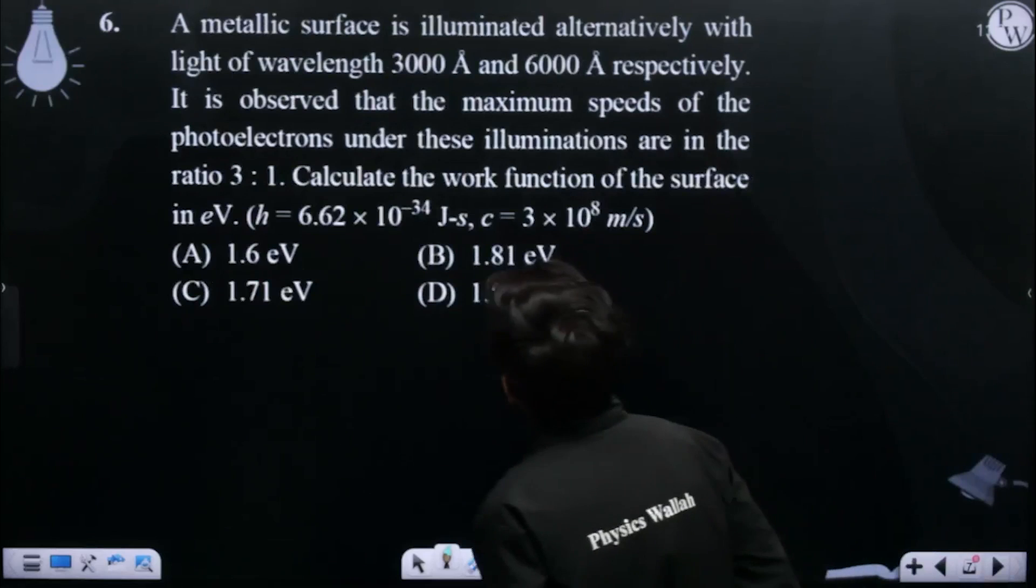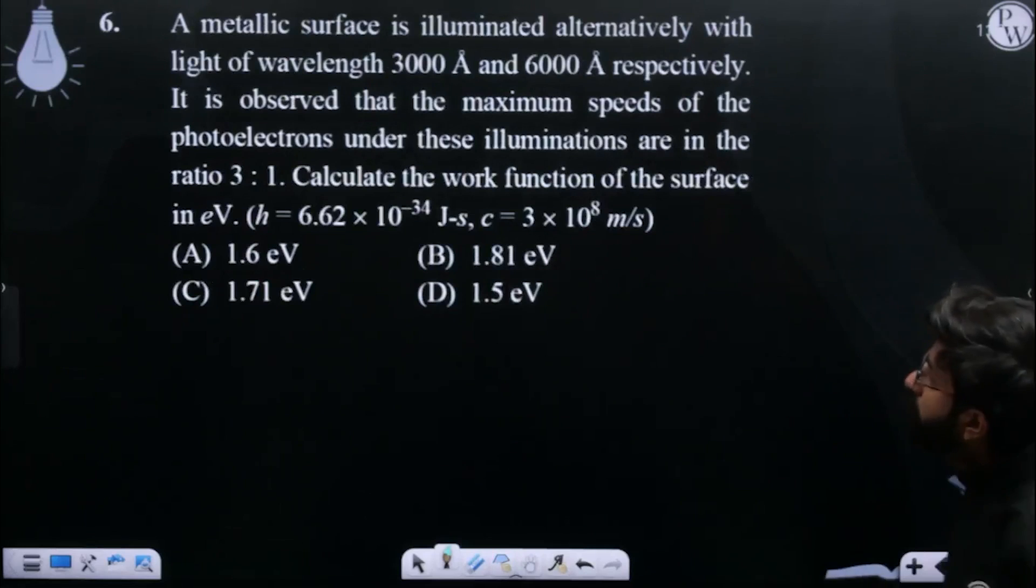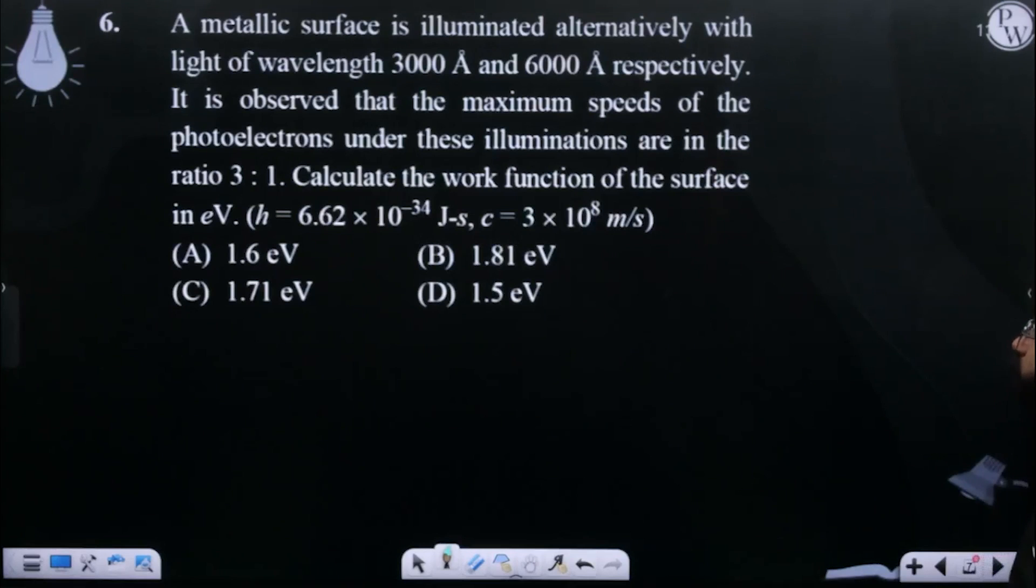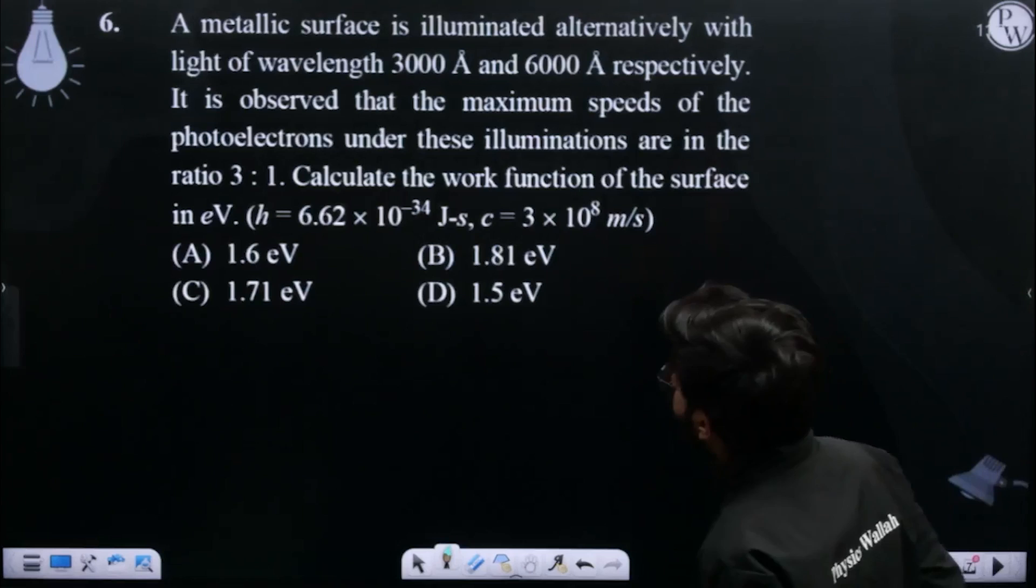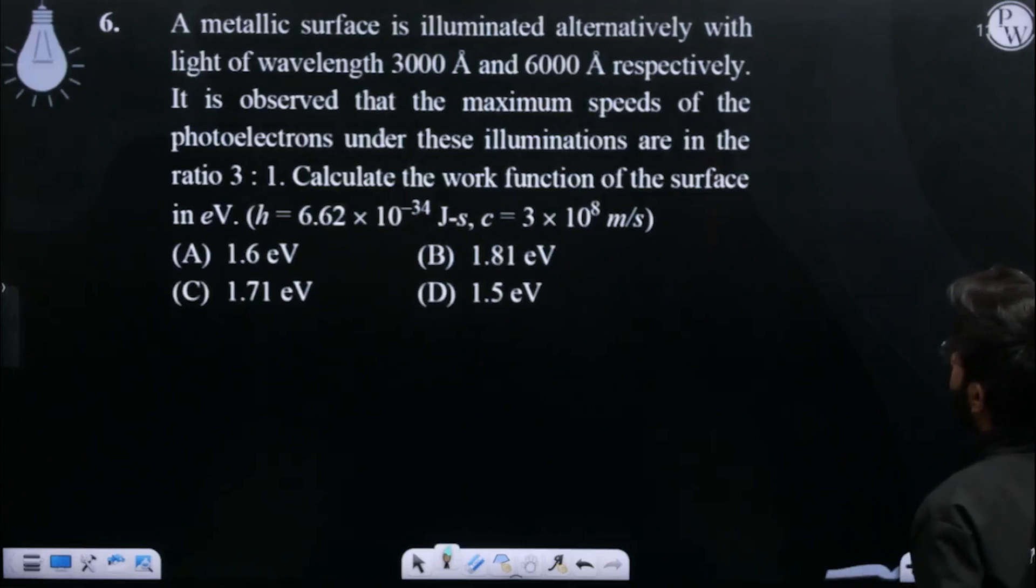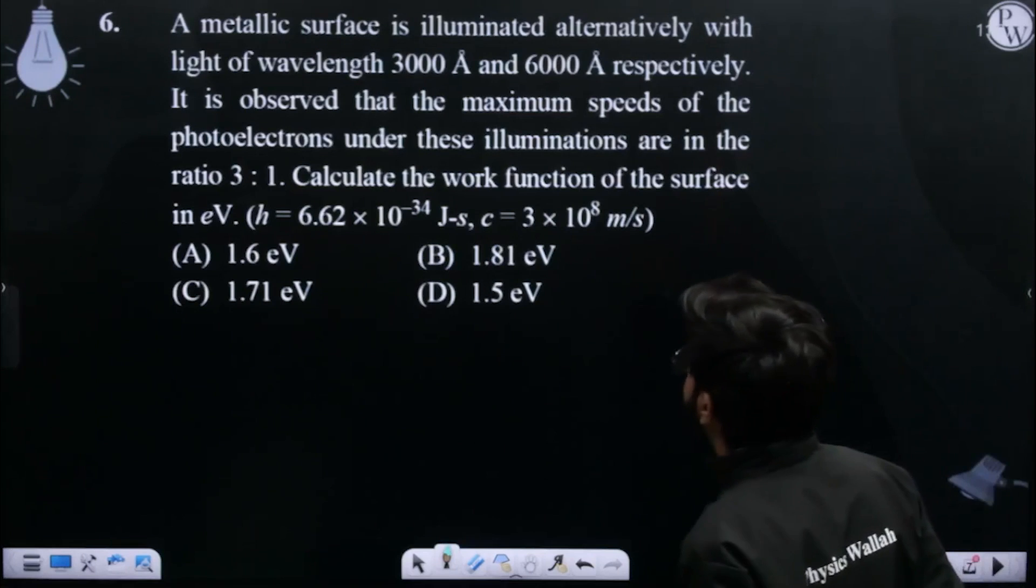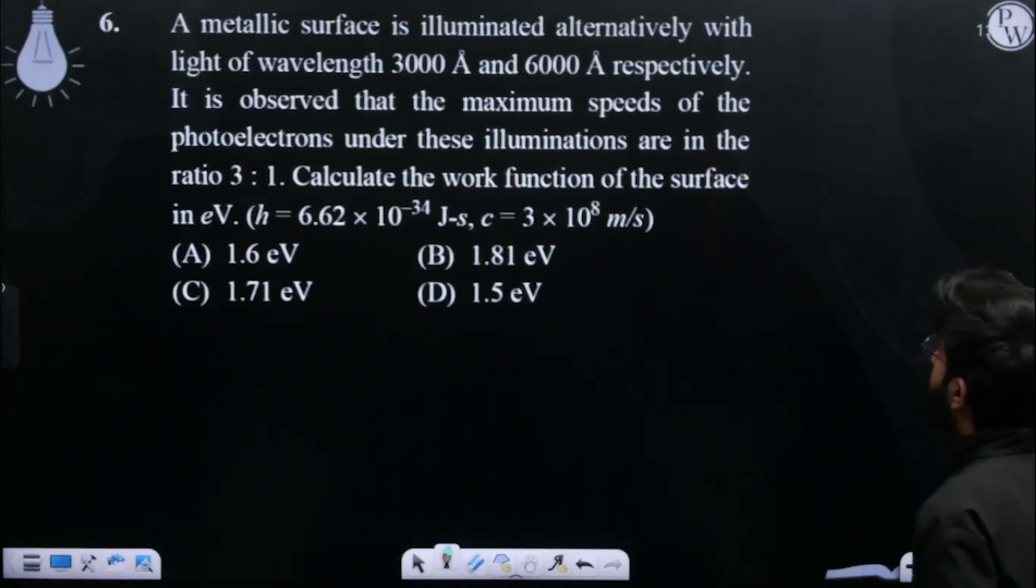The next question is: a metallic surface is illuminated alternately with light of wavelength 3000 angstrom and 6000 angstrom respectively. It is observed that the maximum speeds of the photoelectrons under these illuminations are in ratio 3:1. Calculate the work function.